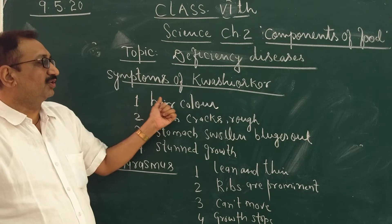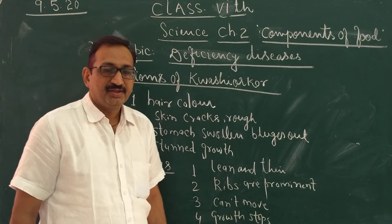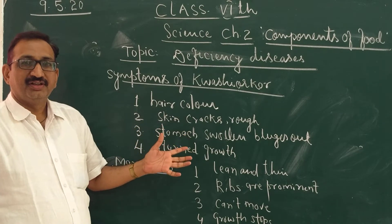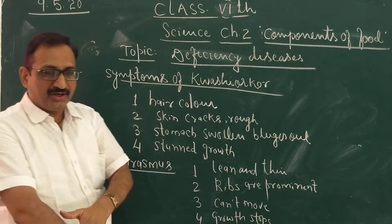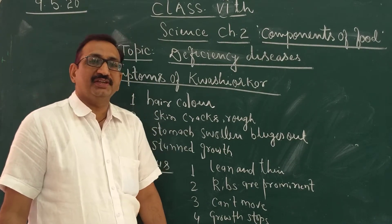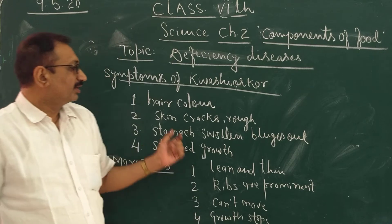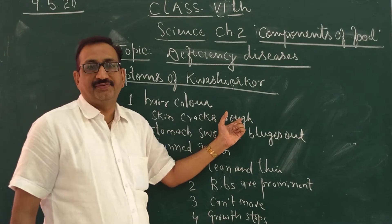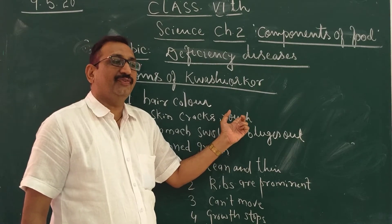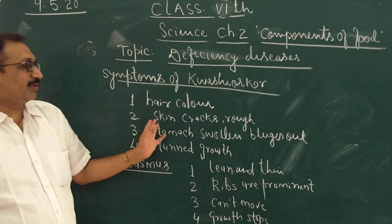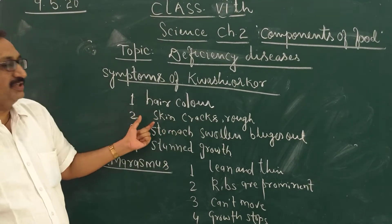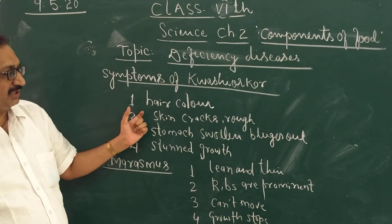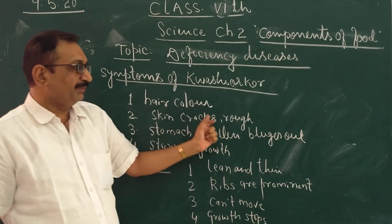The second symptom of Kwashiorkor is that the skin of the child starts cracking everywhere — on the hands and every part of the body. The skin becomes cracked and rough. If you touch it, you will find there are some scales over the skin. So the second symptom is very prominent skin cracking — the skin of the child starts cracking and becomes rough.